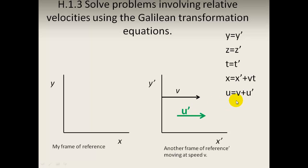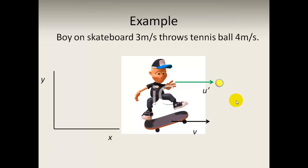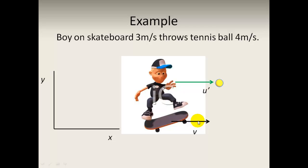This is a Galilean transformation. For example: my frame of reference is the Y-X axis. Here we have a boy on a skateboard — the skateboard is its own frame of reference — and he is moving at a velocity V. He throws a ball away from him relative to his frame of reference at u prime. The boy on the skateboard is going at three metres per second away from us, and then on top of that he throws a tennis ball away from him at four metres per second.